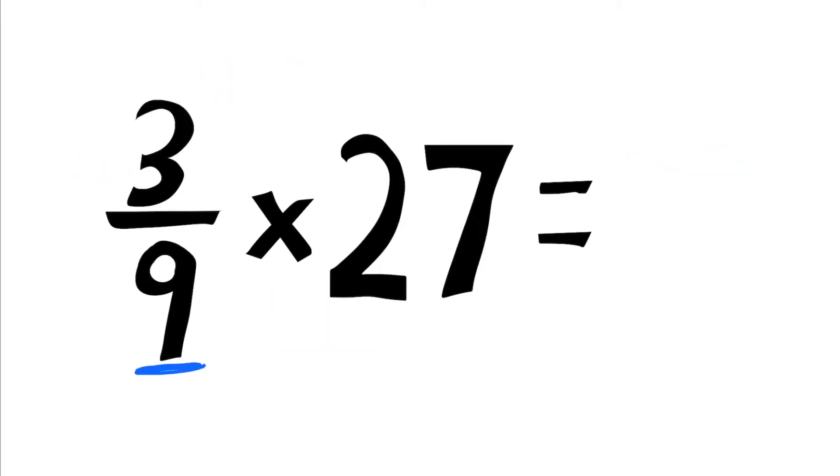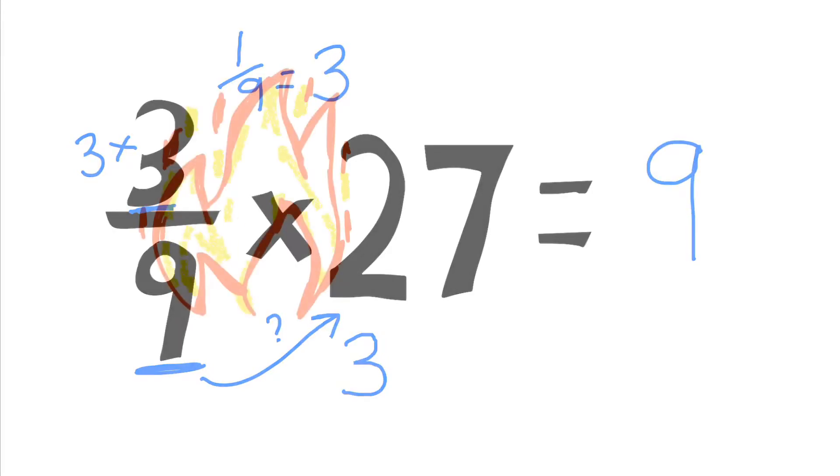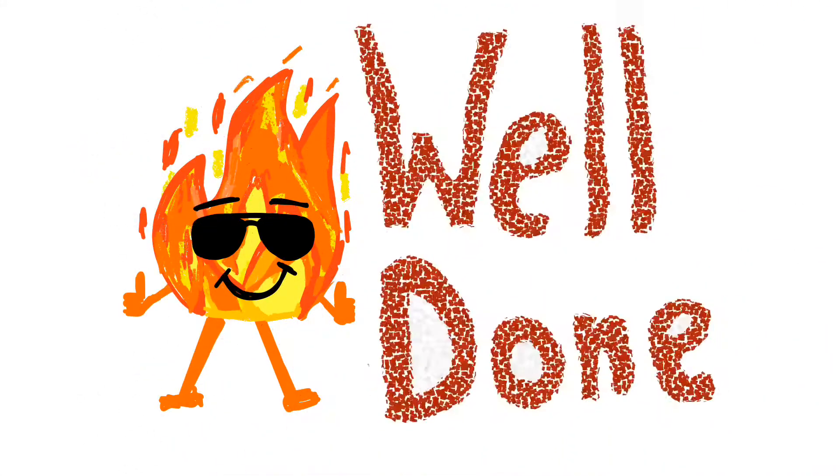Three-ninths of 27. How many nines in 27? Well, we know that's three. So therefore, one-ninth of 27 is equal to three. To find out what three-ninths are, well, we go three times three, which equals nine. Well done! Wasn't that so much fun?